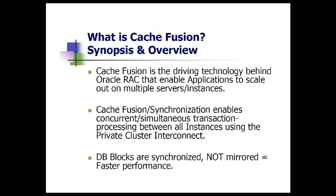So what is cache fusion and how does it come into picture? Cache fusion is essentially the backbone behind Oracle RAC that allows applications to parallelize and scale out versus scaling up within a single monolithic SMP mainframe-like machine. Cache synchronization, or fusion as it's called, allows simultaneous concurrent transaction processing amongst the instances. It uses a physical private network interconnect to implement the fusion and synchronization of data buffer blocks, presenting a read-consistent image of data across all instances of the cluster.